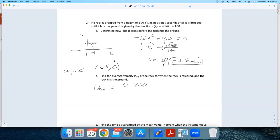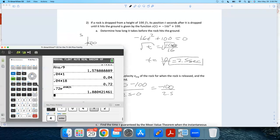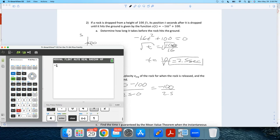0 minus 100. So this is s of t1 and s of t0. Final minus initial over final minus initial t. These are my outputs, these are my inputs. I get negative 100 over 2.5, and if I get my calculator out, negative 100 divided by 2.5 equals negative 40.